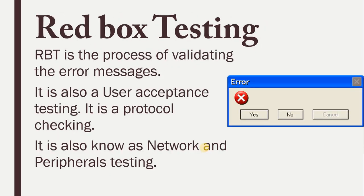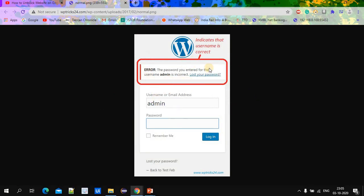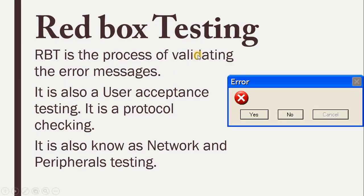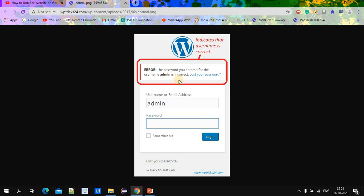Next is red box testing. Red box testing is used to check error messages. It is part of user acceptance testing, involves protocol checking, and is mainly used in network and peripheral testing. For example, when connecting devices, we sometimes get error messages. Here I have an image related to WordPress showing an error — this is the type of technique used to check error messages on a web page or application.